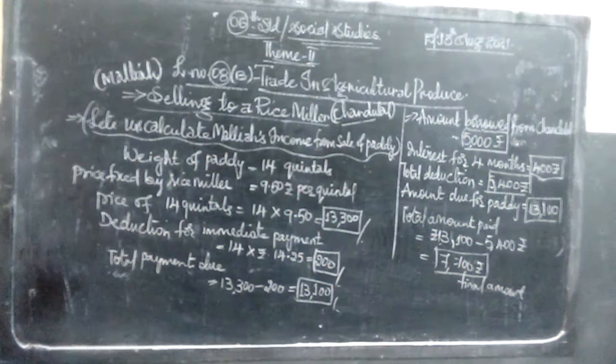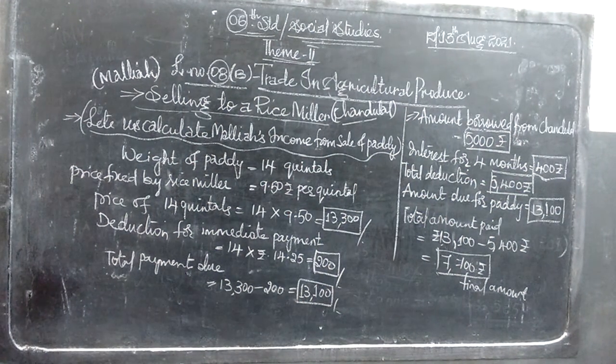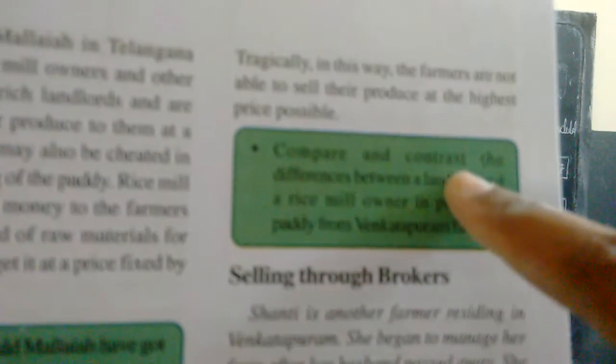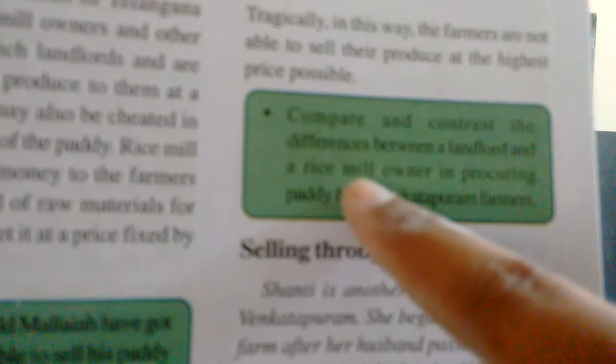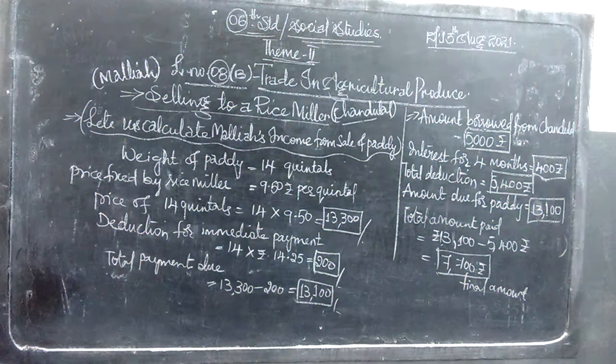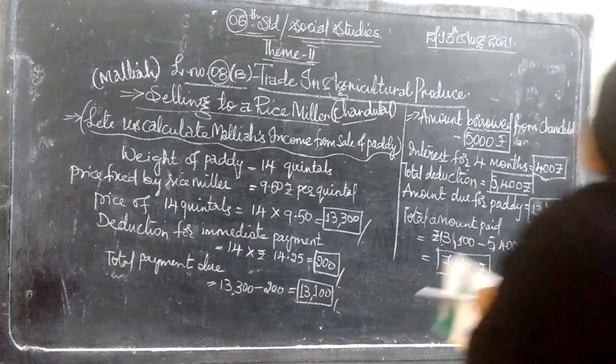The last inbox question: compare and contrast the differences between the landlord and the rice mill owner in procuring paddy from Venkatapuram farmers. This is what the in-text questions are related to — the topic of selling through a rice mill owner.